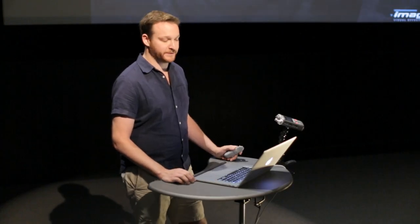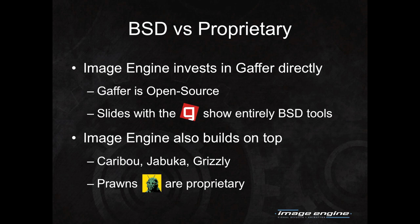Whenever we give presentations, there's always a bit of confusion about what's open source and what isn't, so I try to use icons in my presentations to clarify. You can look in the upper right corner — there's either the Gaffer G logo, which means all tools and concepts on the slide are completely open source, or you'll see the Image Engine logo, which means something is proprietary. Some of those slides might still contain open source tools; it's just that something there is proprietary.